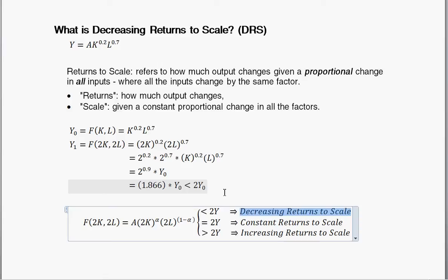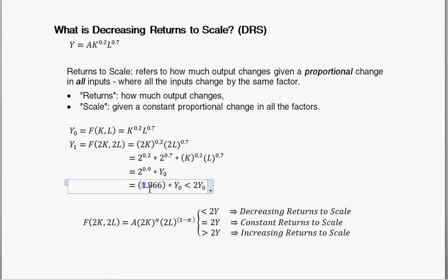An example of decreasing returns to scale in microeconomics would be a firm that's very small — imagine a restaurant stuck with a very small kitchen. That kitchen has a certain number of chefs and a certain amount of production equipment like stoves and countertop space, producing a certain amount of food every night. If you were to double the capital and labor — twice as much cooking equipment and twice as many chefs — but the kitchen is sufficiently small, you're not going to double production. You'll get less than double. Too many chefs in a kitchen.